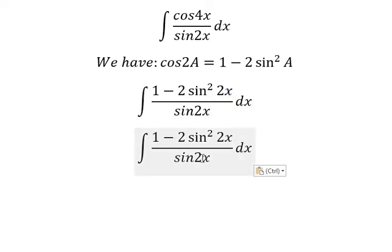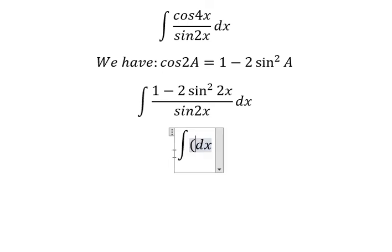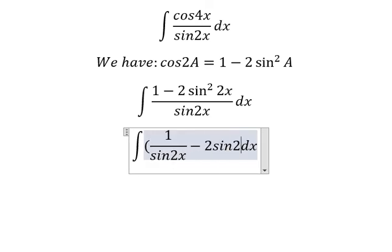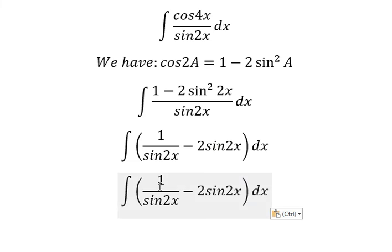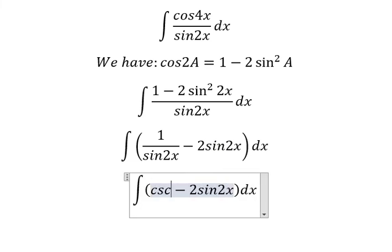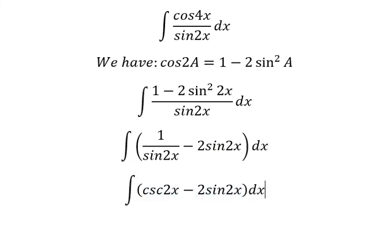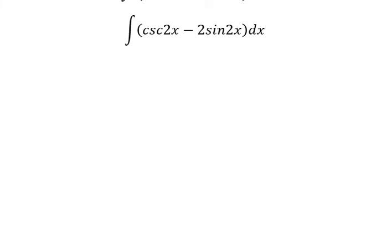So 1 divided by sine 2x, and sine squared 2x divided by sine 2x. This gives us cosecant of 2x, and now we have the final answer for the integration of this.